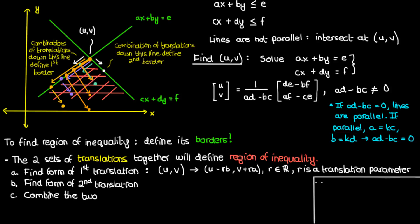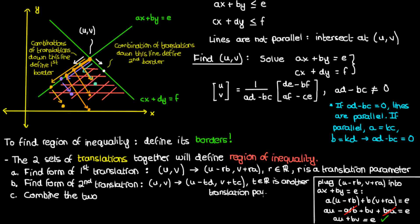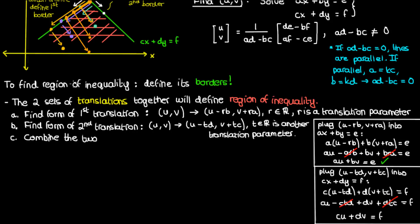We can verify that this translation moves our point of intersection along the first line by plugging it into the equation of the first line. If we do that we get a·u plus b·v equals e, which is essentially our point of intersection — and it makes sense that the point of intersection would lie on and satisfy the equation of the first line. Similarly, from u comma v the second translation can be defined by u minus t·d comma v plus t·c, where t is a real number parameter. By changing t we can move to different places along the second line, and plugging it in gives c·u plus d·v equals f.